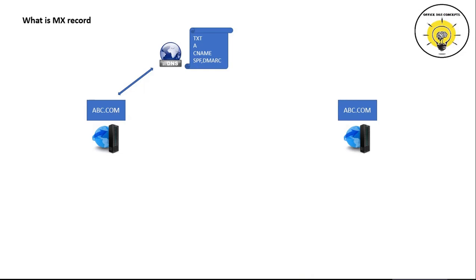If an external organization sends an email to abc.com domain users, that email will not be able to find a path to the recipient. Because when the SMTP service reaches the public DNS of abc.com domain, it will not find an MX record and the email will not be delivered to abc.com's email server. To overcome this situation, abc.com domain will have to publish an MX record in their public DNS so all external emails will be routed to their email servers.